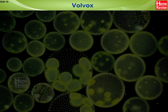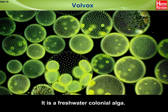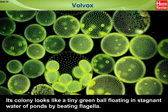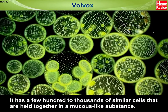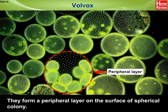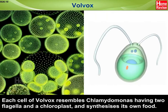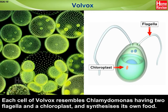Volvox is a freshwater colonial alga. Its colony looks like a tiny green ball floating in stagnant water of ponds by beating flagella. It has a few hundred to thousands of similar cells that are held together in a mucus-like substance. They form a peripheral layer on the surface of the spherical colony. Each cell of Volvox resembles Chlamydomonas, having two flagella and a chloroplast, and synthesizes its own food.